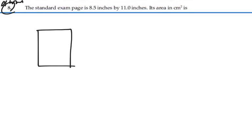so if we had an exam page, 8.5 inches by 11 inches, for an area of a rectangle, it's the sides multiplied together, so that's side length A times B,